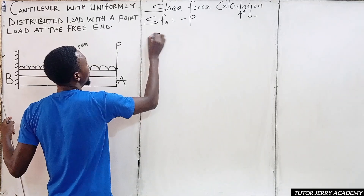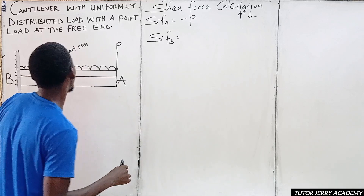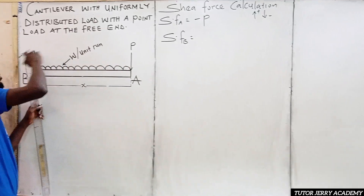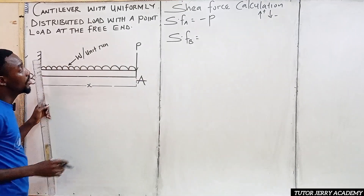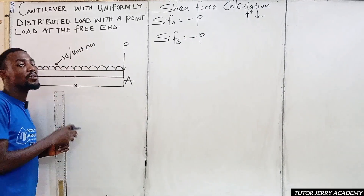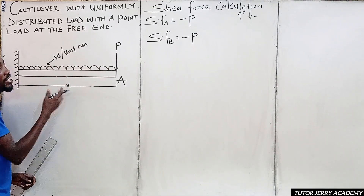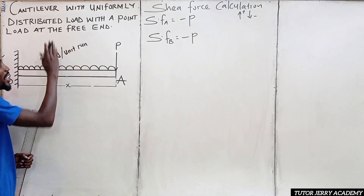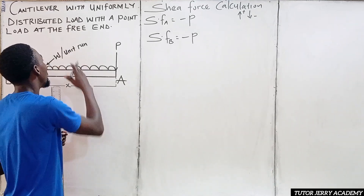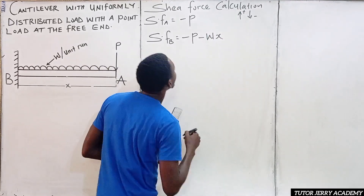Next, we calculate the shear force at point B. At point B we have a point load and a uniform distributed load running from one end to the other. We have minus P, then we convert the uniform distributed load to a point load: W multiplied by S, which gives WS acting downward. So shear force at B equals negative P minus WS.